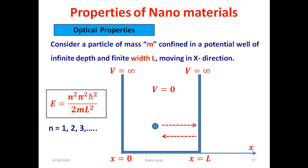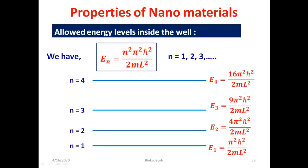The discrete energy values possessed by the trapped particle are given by E = n²π²ħ²/(2mL²), where n is the quantum number (integer 1, 2, 3...), m is the mass of the particle, and L is the width of the potential well — or the quantum confinement range in nano terms. Using different values of n, we get a range of discrete energy levels. Plotting these gives the energy level diagram shown in the figure.